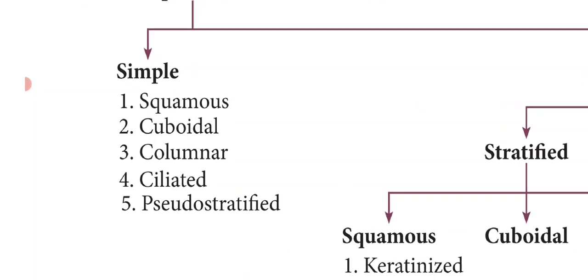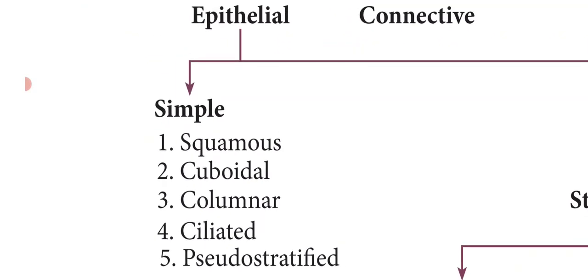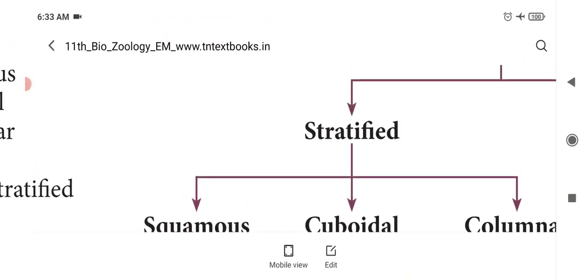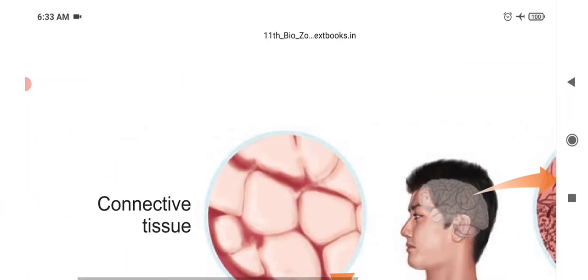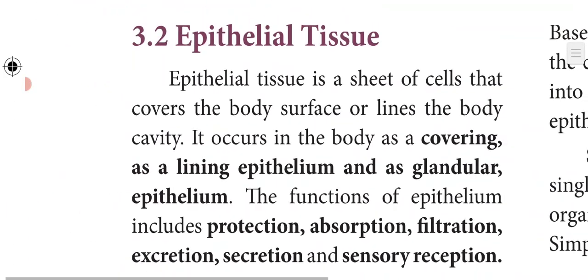First we will look at the epithelial tissue. Epithelial tissue is a sheet of cells that covers the body surface or lines the body cavity. It acts as a cover and protects the whole body. It occurs in the body as a covering, as a lining epithelium, and as glandular epithelium.